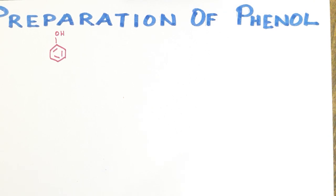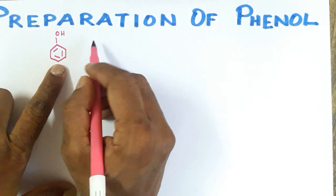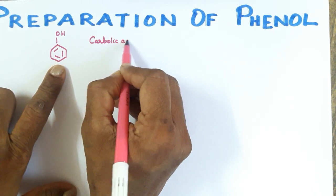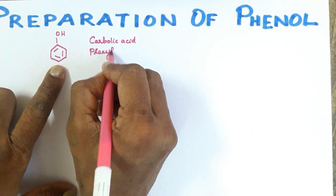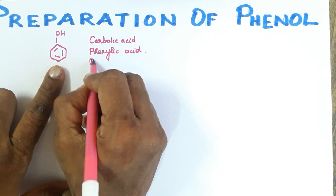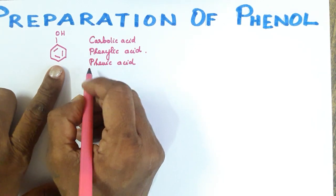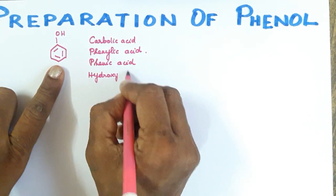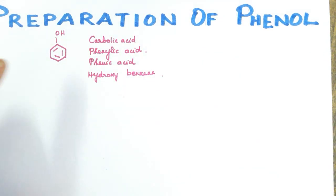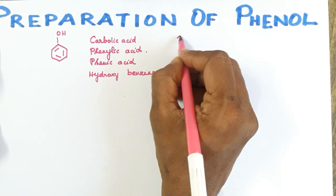Phenols can be extracted from crude petroleum. Phenol has many names: carbolic acid, phenolic acid, phenic acid, and hydroxybenzene. There are many organic compounds that involve phenol in their reactions, making it an important aromatic compound. We will now look at how phenol is prepared — there are four methods.